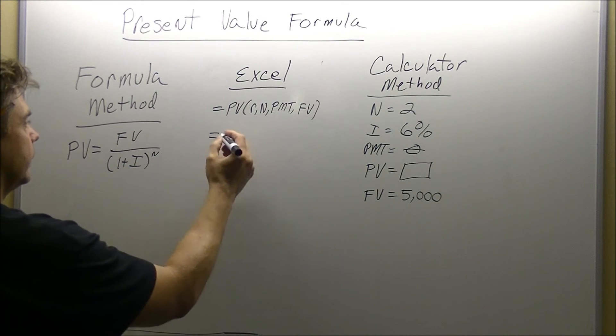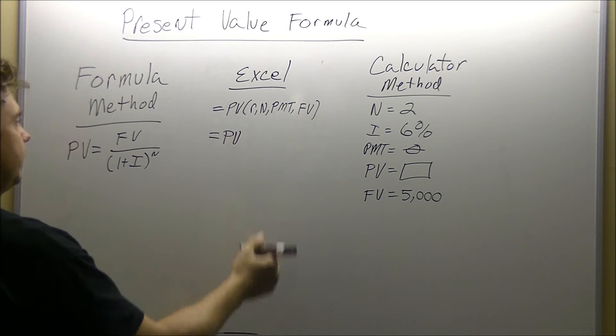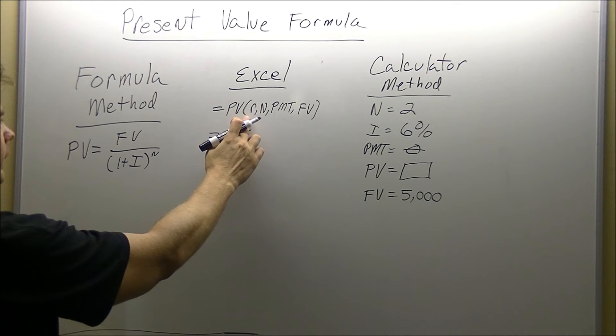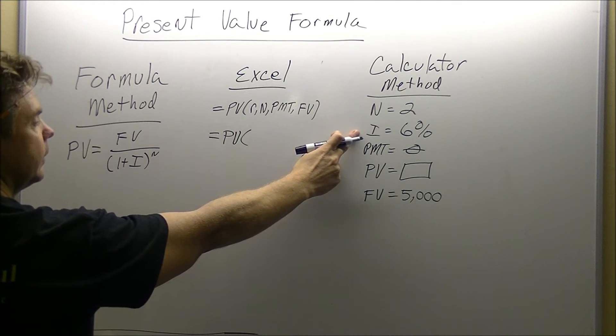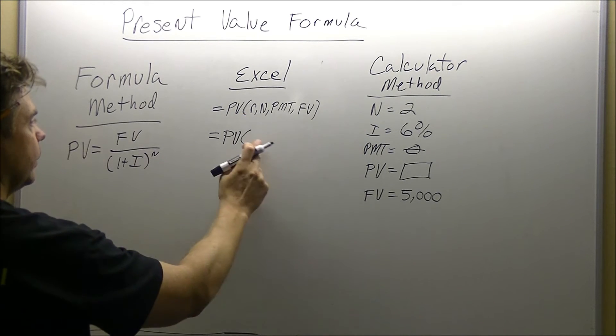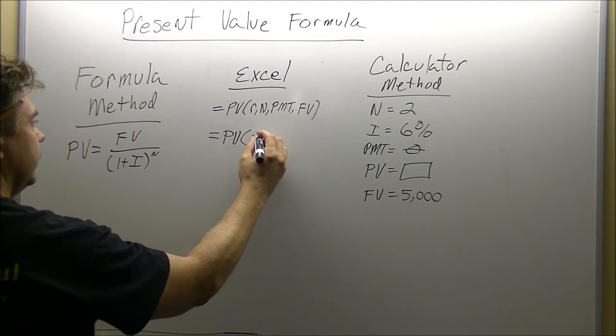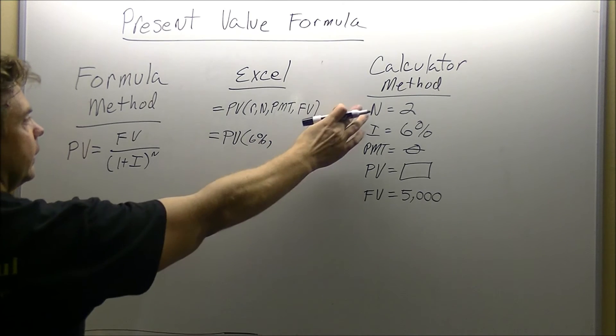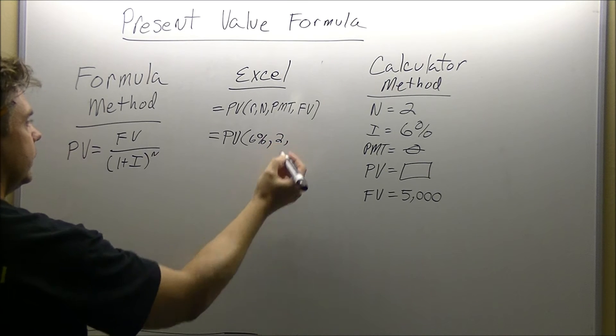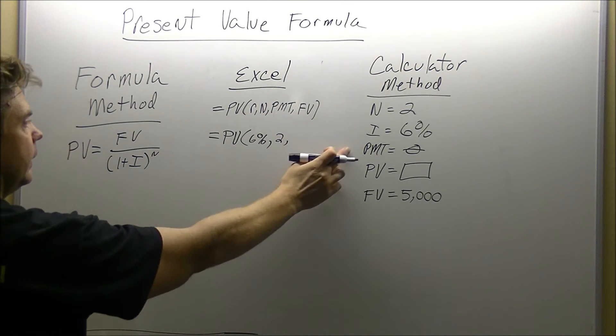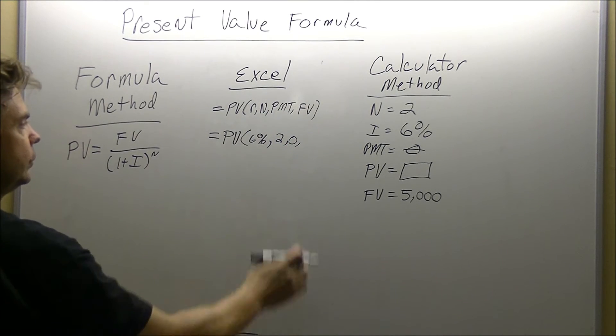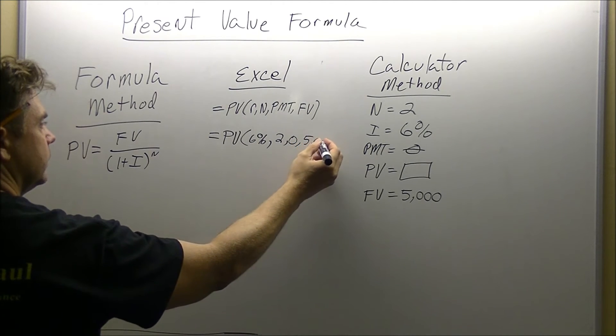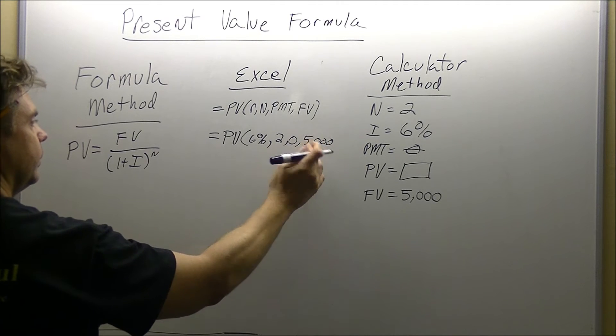So to substitute, we would open up with the PV, open up a parenthesis. Now with Excel they use R, with the calculator method they use I. So we're going to substitute 6%, and you do want to use the percent sign with the formula, then we'll take our N, plug in the 2, payment 0, future value, put in $5,000. You don't want to put in the comma.